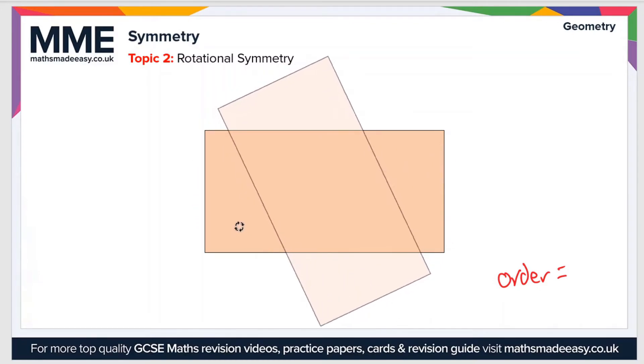If we go once more 90 degrees, it doesn't map onto itself, and then finally through a full 360 degree rotation it maps onto itself twice in total. So the order of rotational symmetry is two.